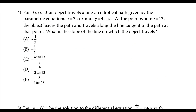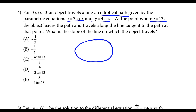This is a wordy word problem: an object traveling on an elliptical path with parametric equations. At t equals 13, when the object leaves the ellipse — imagine an object spinning around and it just gets launched. We want to know the slope of the line tangent at which the object leaves. If the particle were spinning around like this and it gets launched, you want to know the slope of that tangent line.